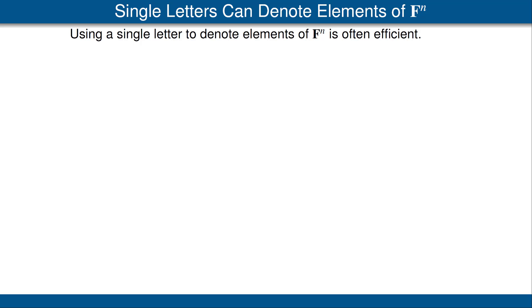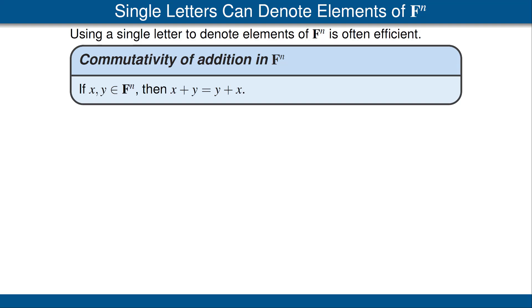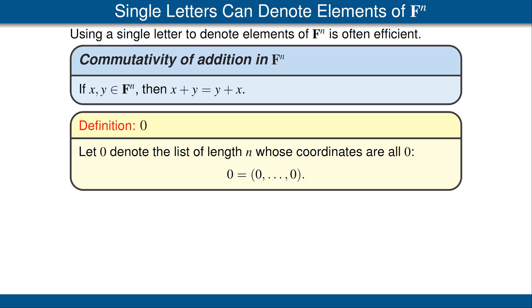We have seen that a typical element of F^n is the list x₁, ..., xₙ. However, it's often more efficient and cleaner to use a single letter to denote an element of F^n. For example, here is a clean statement that addition is commutative on F^n. Here x and y each denote a list of n numbers, but there is no need to write them explicitly as x₁, ..., xₙ and y₁, ..., yₙ.